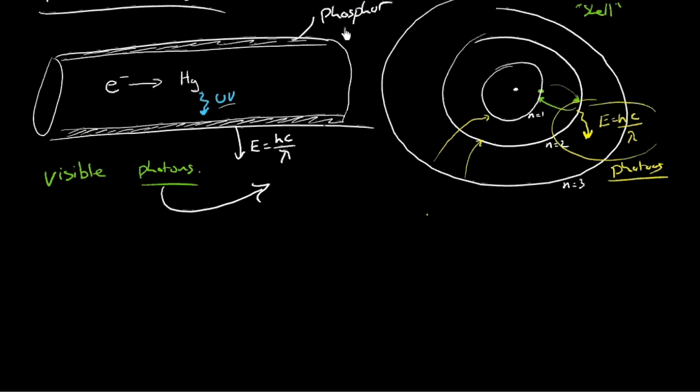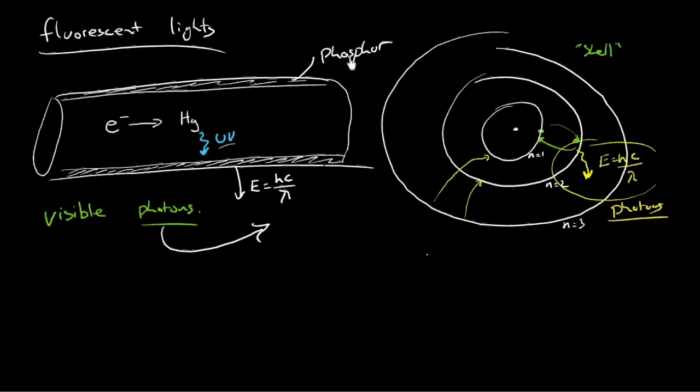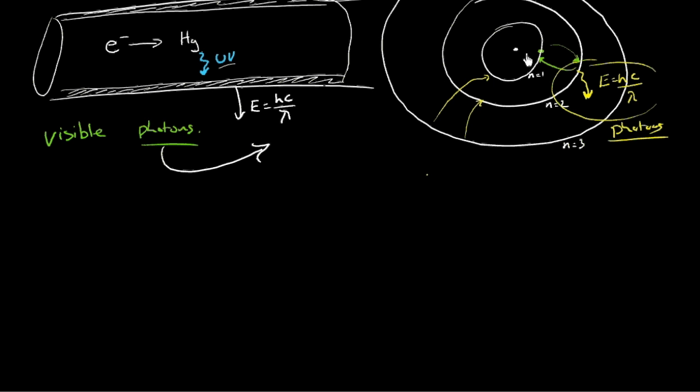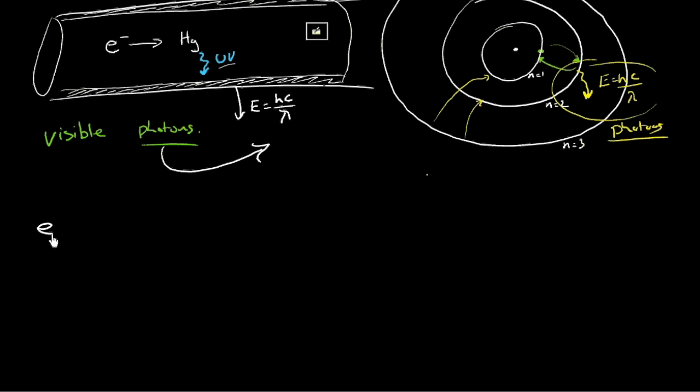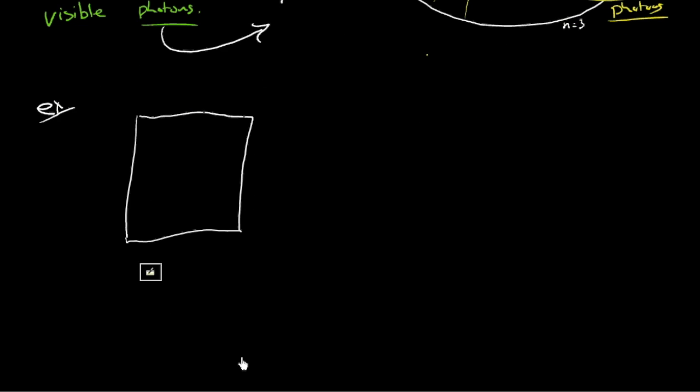I'll give you another example, actually, of this mechanism I discussed with the phosphors that you can actually almost see with your naked eye, if you will. And that's a fluorescent marker, or highlighter, I mean. So if you see, I'll draw a piece of paper here. There we go. There's a paper.